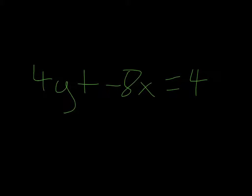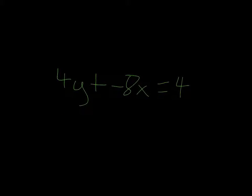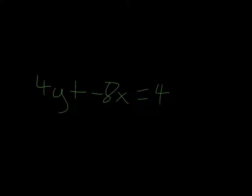So first we're going to move negative 8x to the other side of the equal sign. So let's zoom out a bit, and every time we do that, we have to change the sign. So when we put negative 8x onto the other side of the equal sign, we get 4 plus 8x.